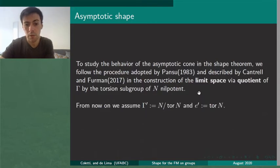Recall we are considering Γ as a virtually nilpotent group and we denote by N its nilpotent subgroup then we define Γ' as the quotient of N by its torsion subgroup. This is used for the construction of G∞.